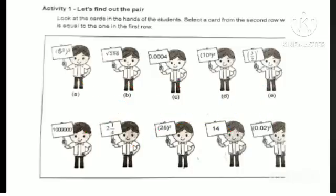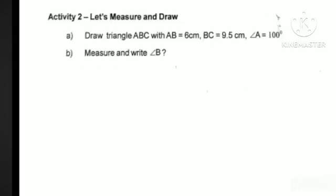Activity 2 — Let's measure and draw. Draw a triangle ABC. ABC is a triangle. BC is 9.5 cm and angle A is 100 degrees.